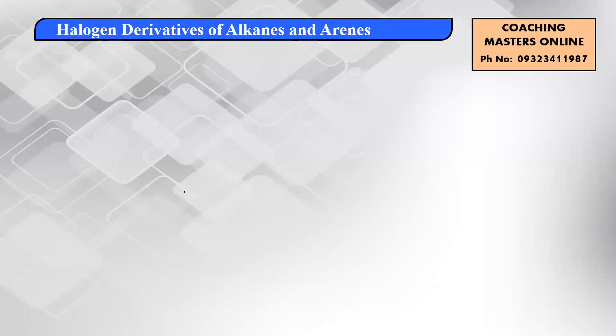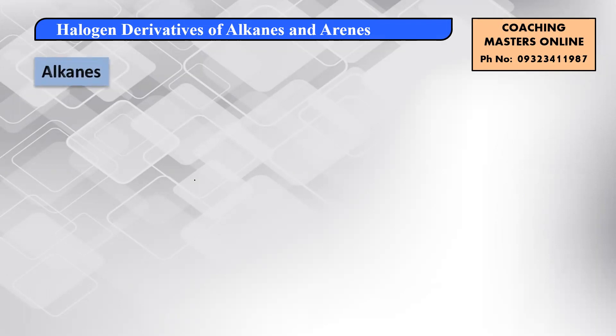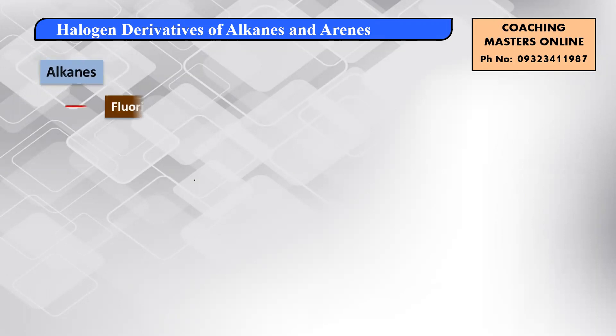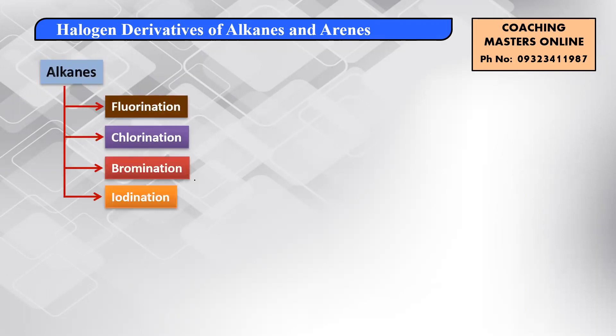Whenever alkanes undergo halogenation, you can substitute fluorine, bromine, chlorine, or iodine. The substitution of fluorine is called fluorination, chlorine gives chlorination, bromine gives bromination, and iodine gives iodination.